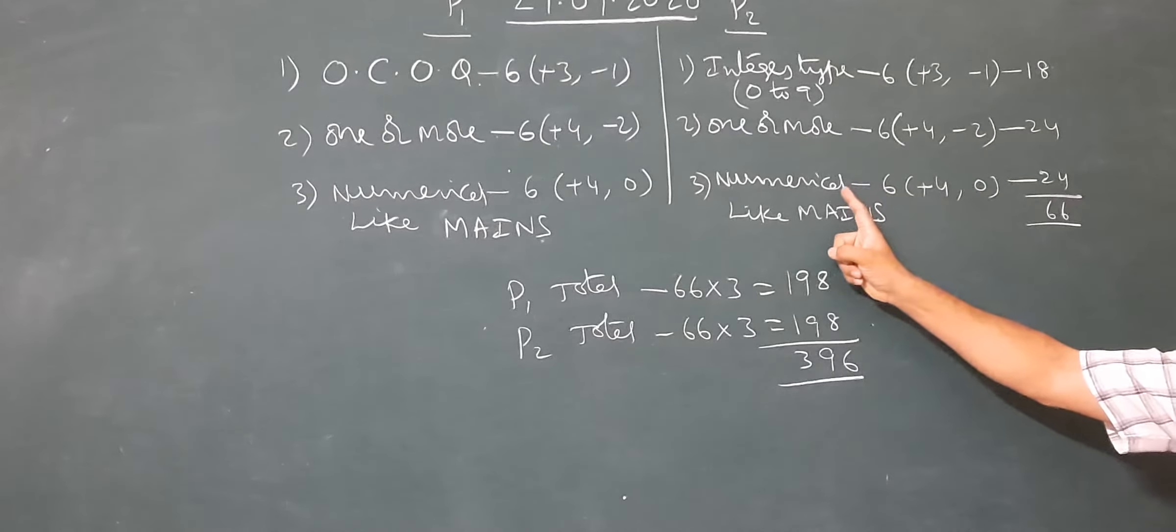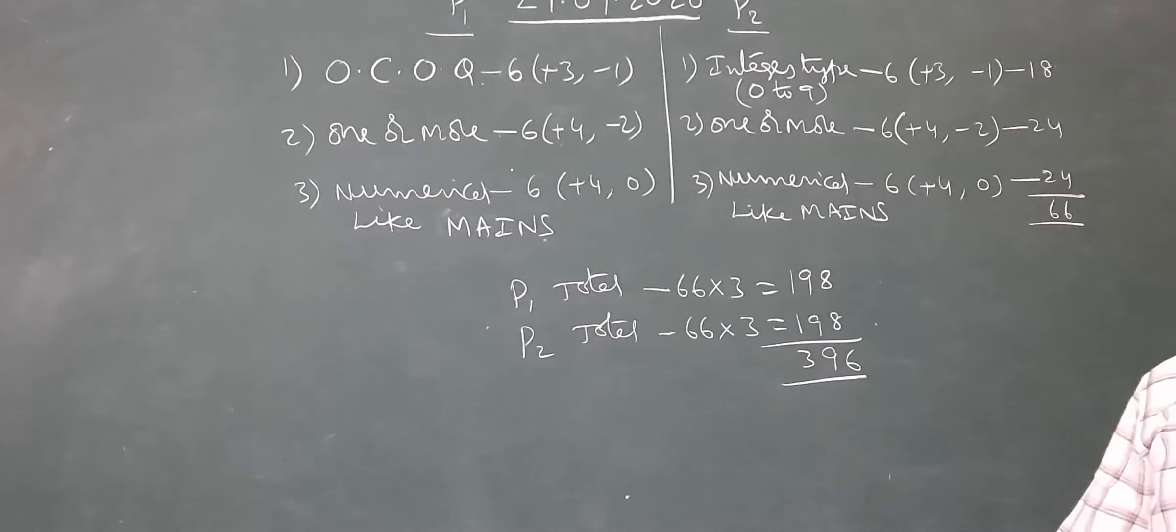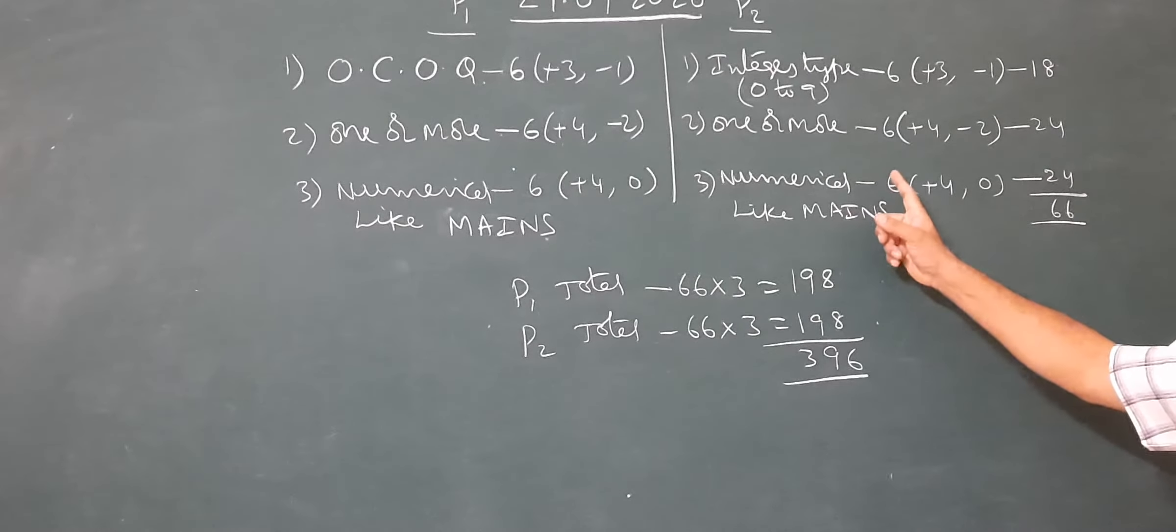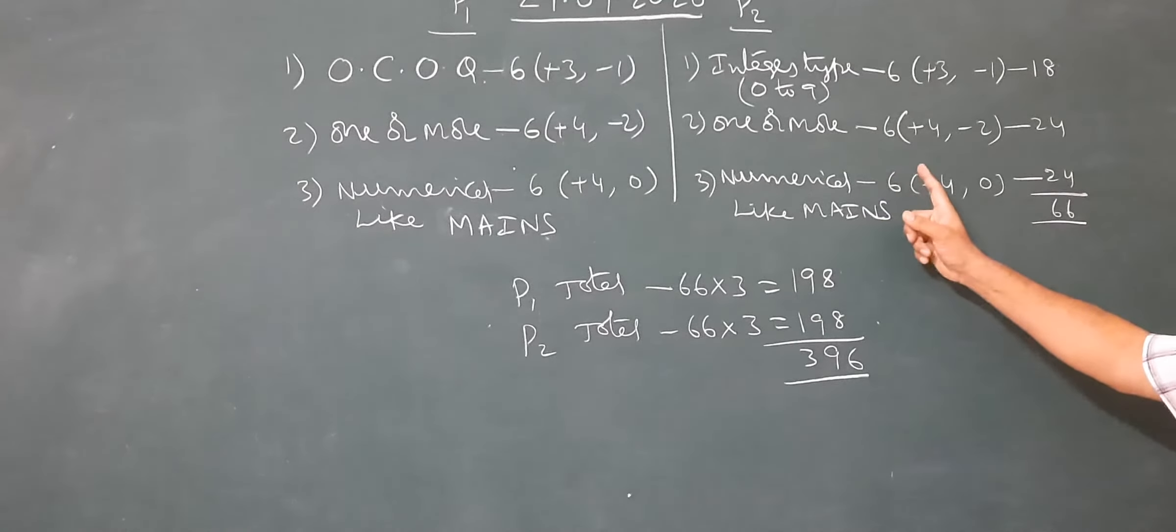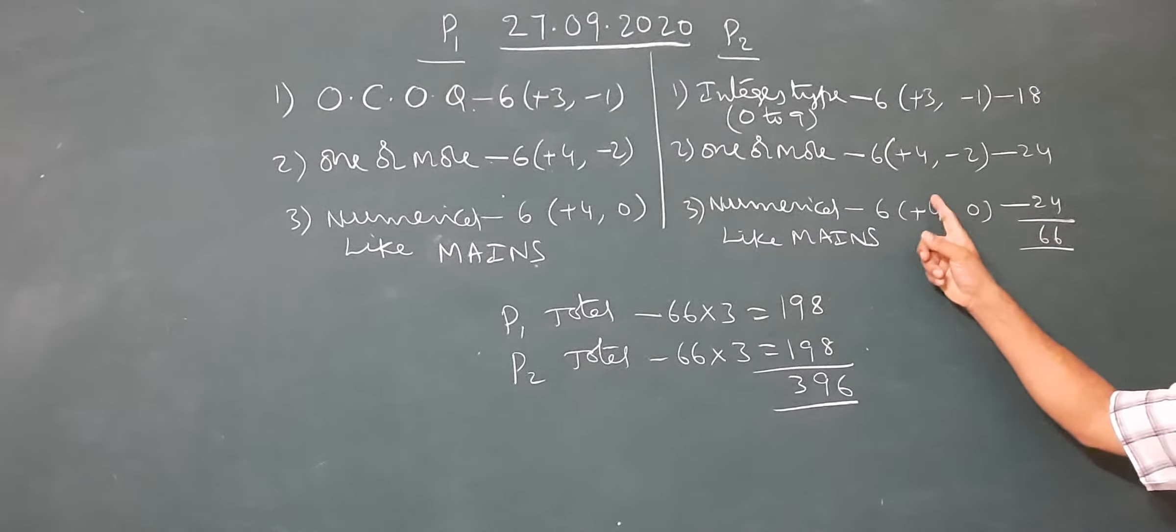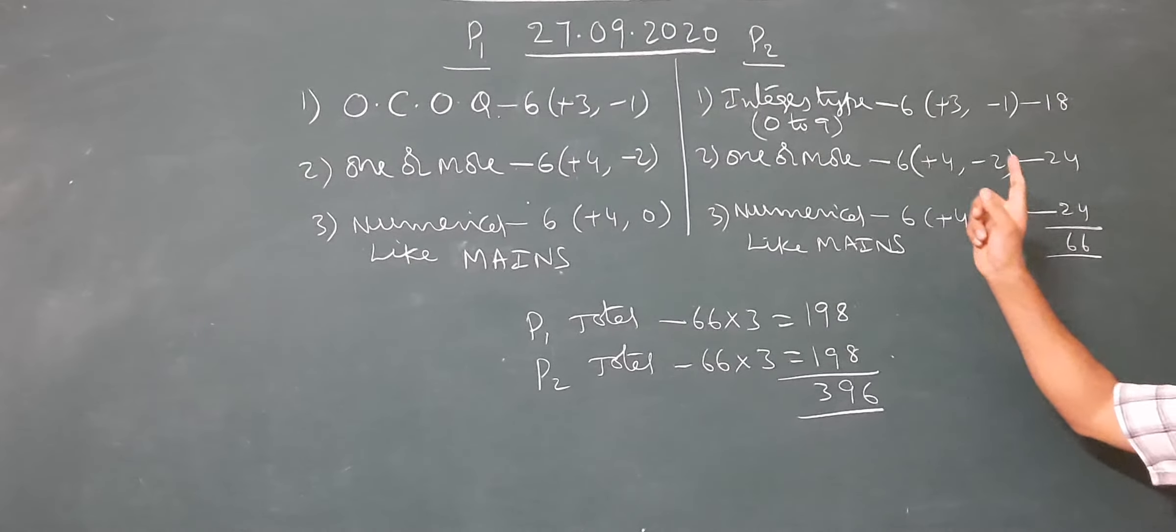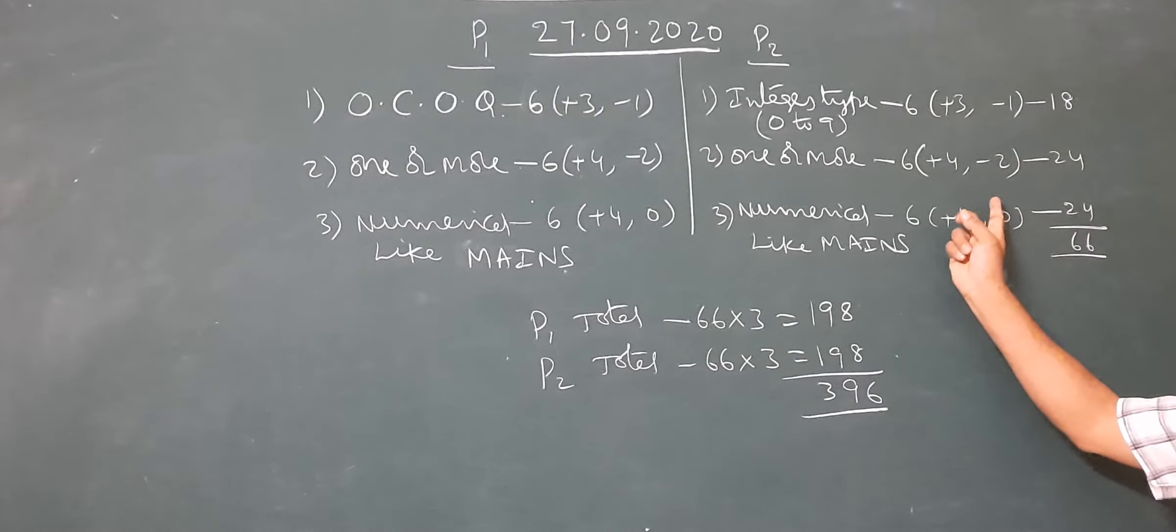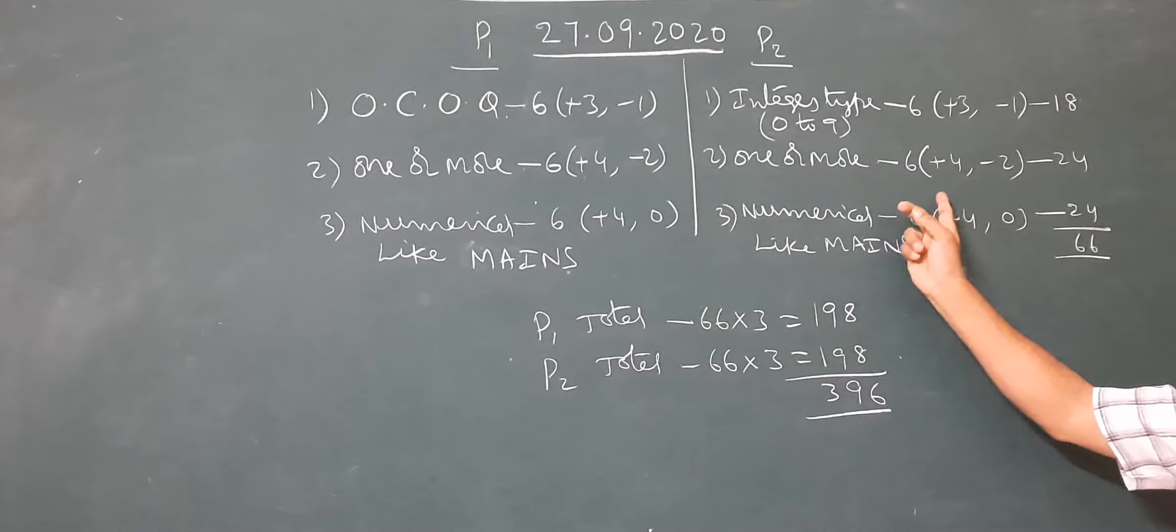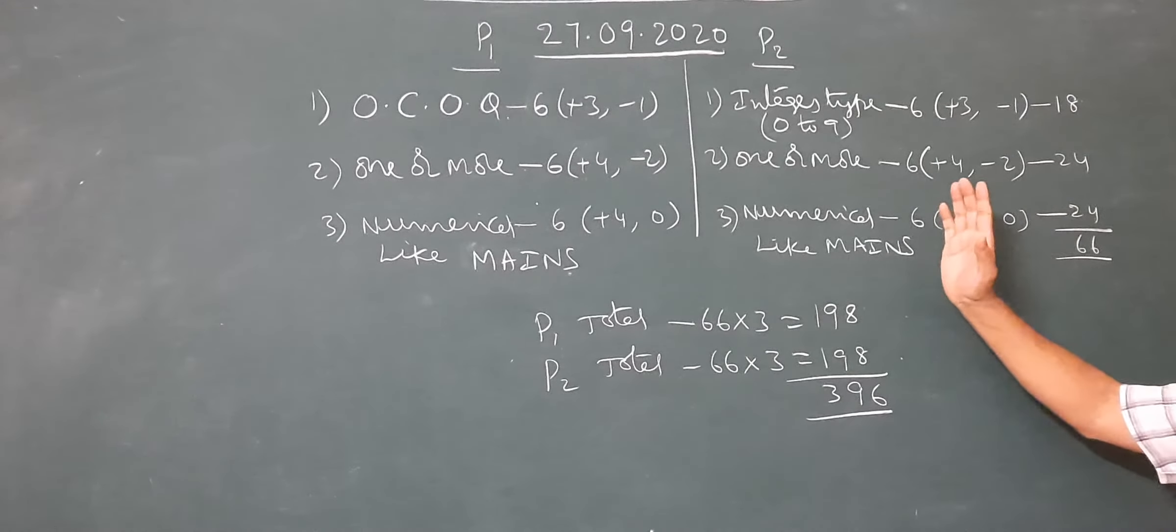Last section, that is third section: numerical type. The same pattern as JEE Mains. In this section, the number of questions are six. Each question carries four marks if it is correct, and no negative marking. So paper one third section and paper two third section, these two have no negative marking, the same type, numerical type. You round up to two decimals.